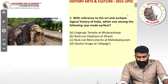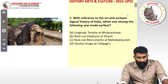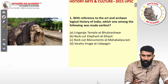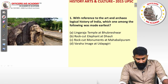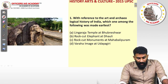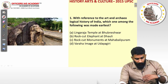The first question: with reference to the art and archaeological history of India, which one among the following was made the earliest? The options given are: Lingaraj temple at Bhubaneswar, rock cut elephant at Dhauli, rock cut monuments at Mahabalipuram, and Varaha image at Udayagiri. We have four monuments to evaluate here.